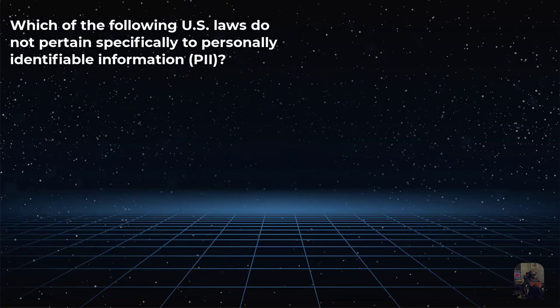Which of the following U.S. laws do not pertain specifically to personally identifiable information? Is it choice A, the Health Information Technology for Economic and Clinical Health Act, which applies to the data in motion and at rest of health information between both internal and external systems?